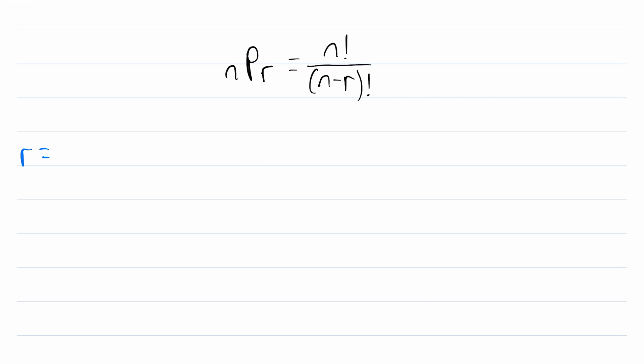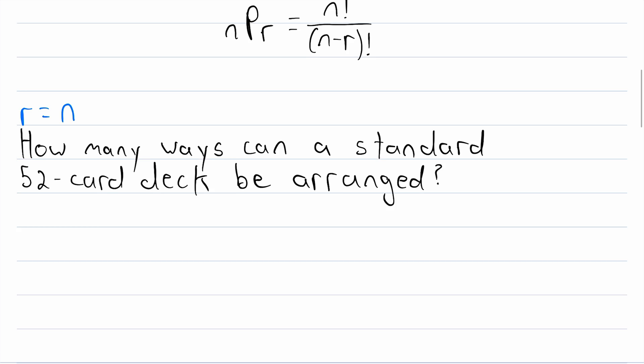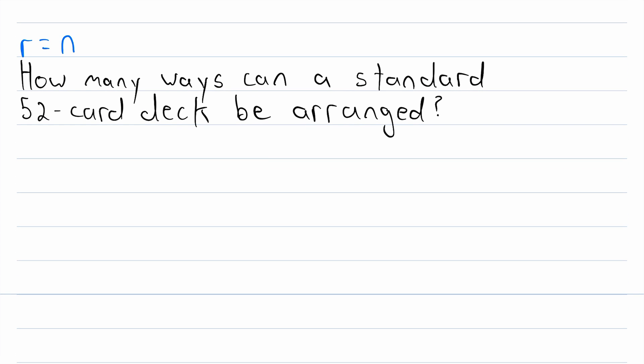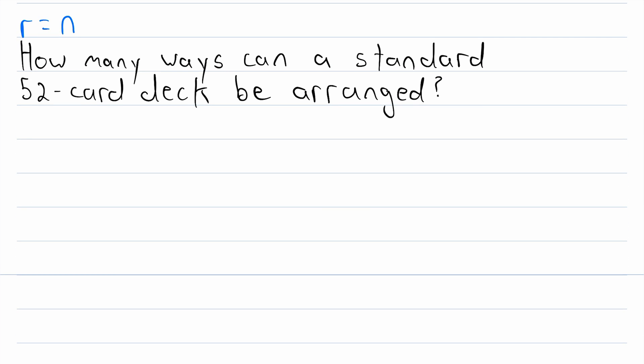The first case we're going to touch on is the case where r is equal to n. So here's an example of that: How many ways can a standard 52-card deck be arranged? So here we're trying to figure out how many ways we can arrange 52 objects in a collection of 52 objects. So this is a case where r is equal to n. But we're not going to use the formula just yet. Let's just apply some logic. We're trying to count the number of arrangements of a 52-card deck.